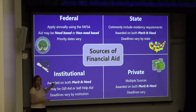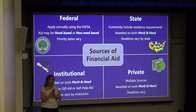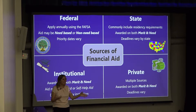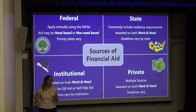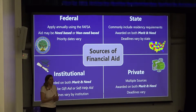One of the main takeaways from all these different sources is to be organized in your search for financial aid — keep a list and note priority application dates. Senior year is going to go by really fast; you're already halfway through the fall semester. Pay attention to those dates and make sure you don't miss any, because that could preclude you from being considered for a type of financial aid.